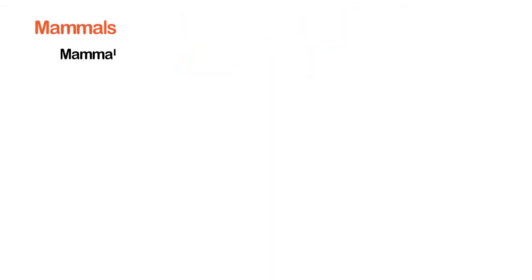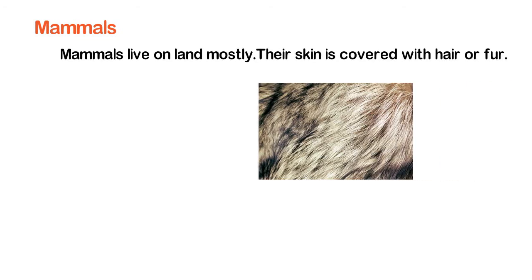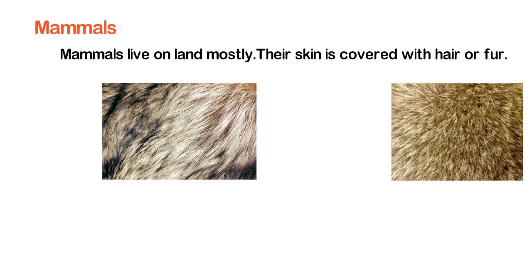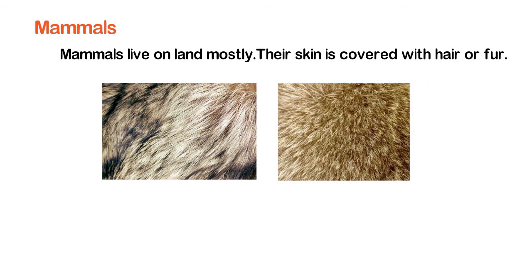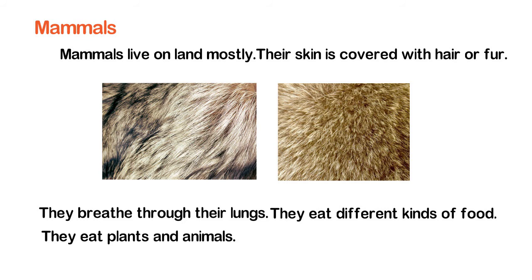Mammals live on land mostly. Their skin is covered with hair or fur. They breathe through their lungs. They eat different kinds of food, including plants and animals. They give birth to babies.